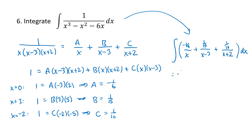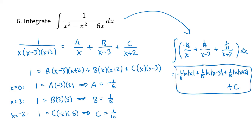So the integral becomes negative 1/6 times the natural log of the absolute value of x, plus 1/15 times the natural log of the absolute value of x minus 3, plus 1/10 times the natural log of x plus 2, plus C. Hopefully you see the similarities across all these examples where we have all linear factors and no repeated factors. In the next video, we'll get into more complicated examples.